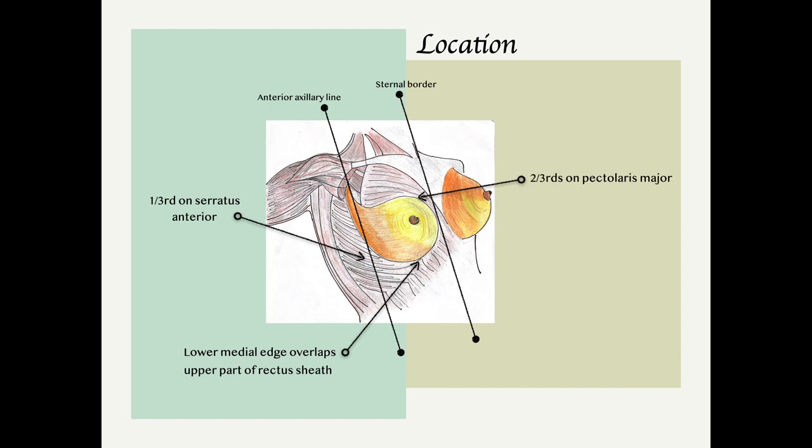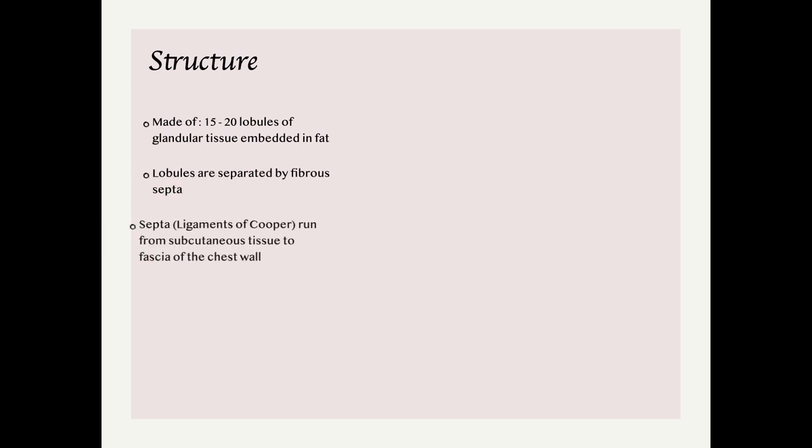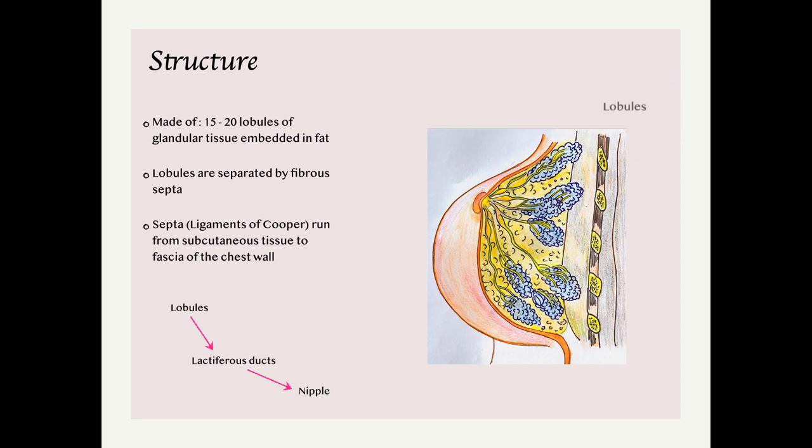The breast is made up of 15 to 20 lobules of glandular tissue embedded in fat. The fat accounts for the smooth contour and most of the bulk of the breast. These lobules are separated by fibrous septa running from the subcutaneous tissue to the fascia of the chest wall.